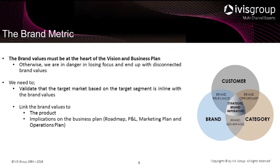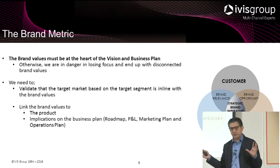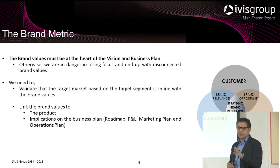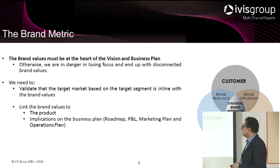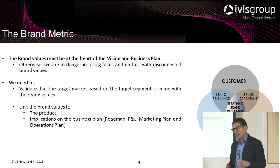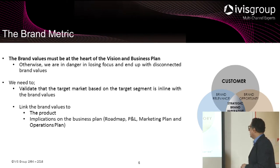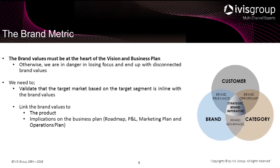You'd be surprised how many times we engage with organizations where different people have different views on what the brand is all about. Brand consistency needs to be at the heart of the vision and the business plan. We need to validate the target market — especially in China where the market is always changing. The brand value must account for three catalyst entities: the brand, the customer, and the category, which represent the offering. Where they intersect is the strategic brand imperative — something you must live and breathe throughout the organization.